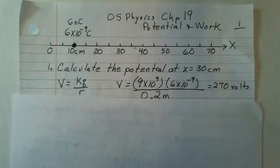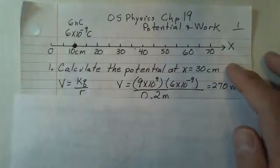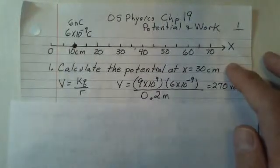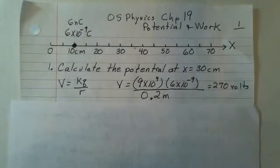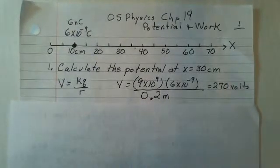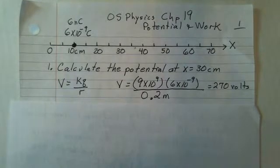We calculate the potential at x equals 30 using the expression KQ divided by R. Our K is of course 9 times 10 to the 9th. We're given the charge of 6 times 10 to the minus 9. We're interested at the 30 centimeter position. That's 20 centimeters away from where the charge is located and we have to convert that 20 centimeters into meters.